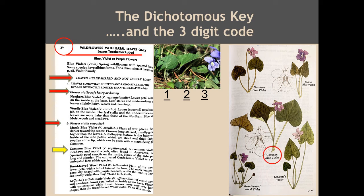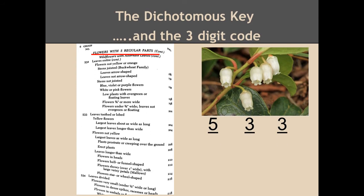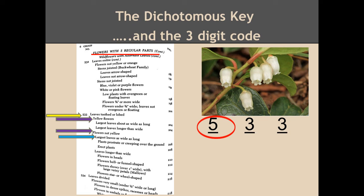Let's try keying out our second wildflower. This is a flower with five regular parts. We look and find the number 533. The leaves are toothed or lobed, and we have a choice: yellow flowers or flowers not yellow. We continue to flowers not yellow, and there are two other choices: largest leaves as wide as long, or leaves longer than wide. In our case, leaves are longer than wide. Then there are three more choices: flowers in a head, flowers bell or funnel shaped, or flowers showy over one inch wide with large veiny petals. In our case the flowers are bell or funnel shaped, which leads us to page 212.